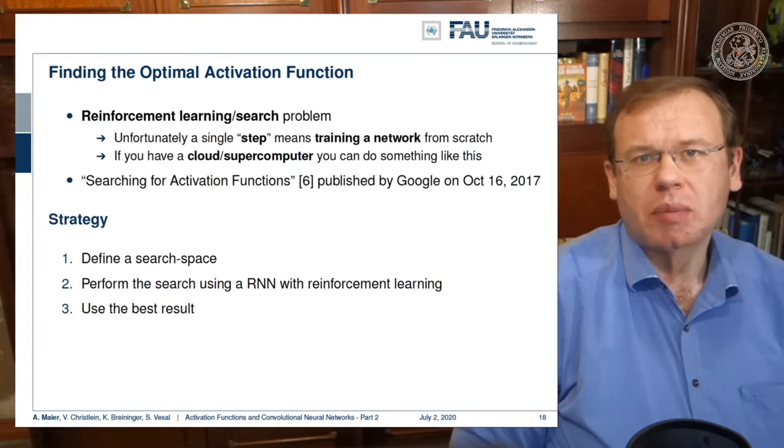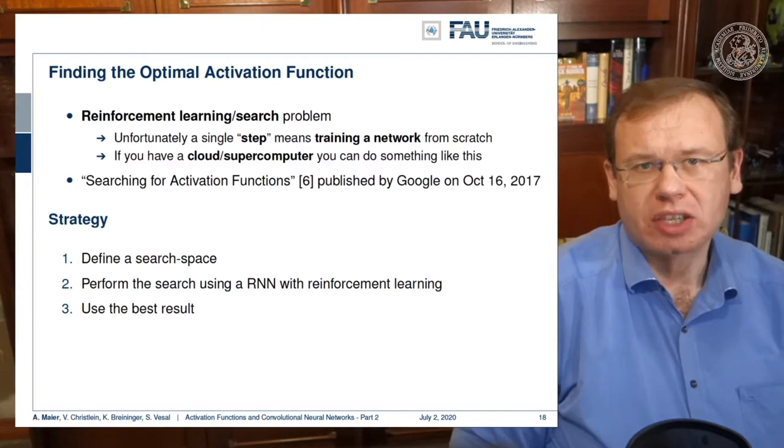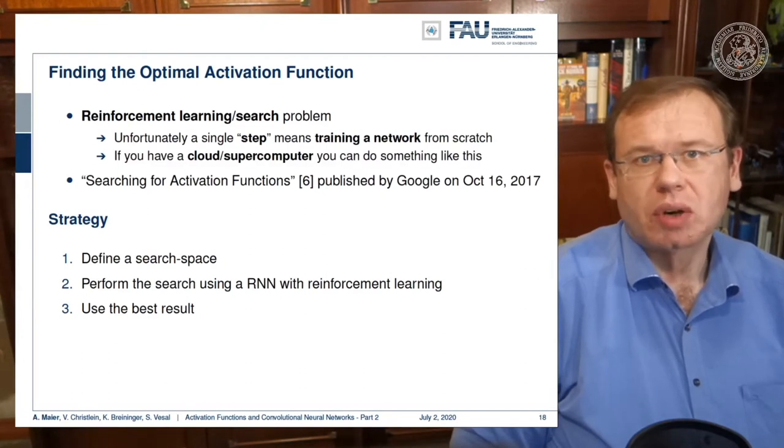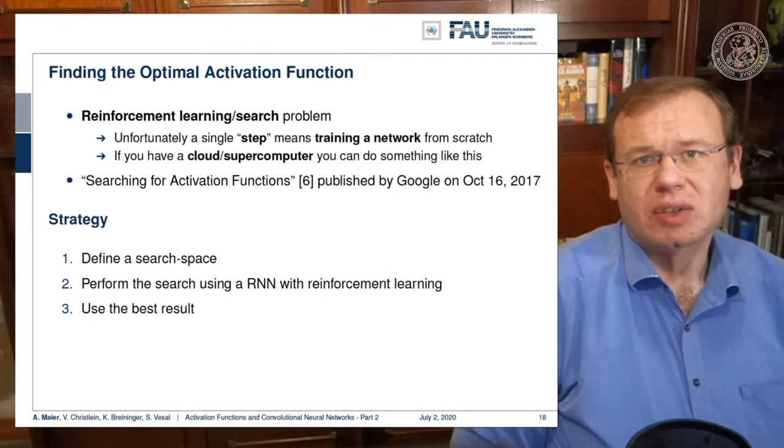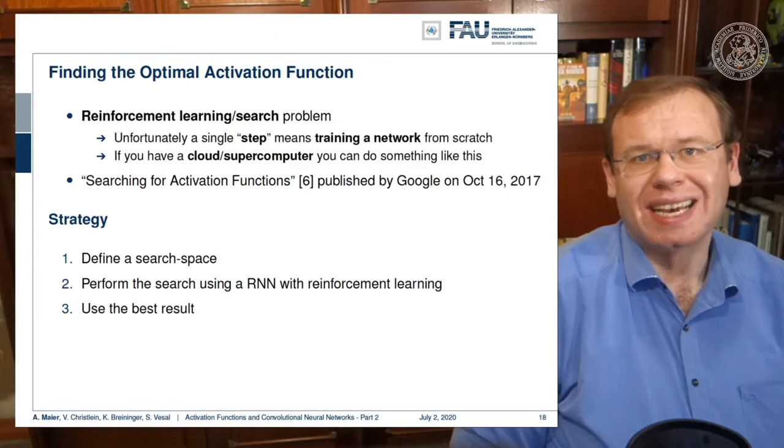In every step of the reinforcement learning procedure, you have to train an entire network from scratch. So you need a supercomputer to do something like this and searching for activation functions is found in reference six. It was published by Google already in 2017. And they actually did this. So the strategy was to define the search space, then perform the search using a recurrent neural network with reinforcement learning and in the end, they want to use the best result.